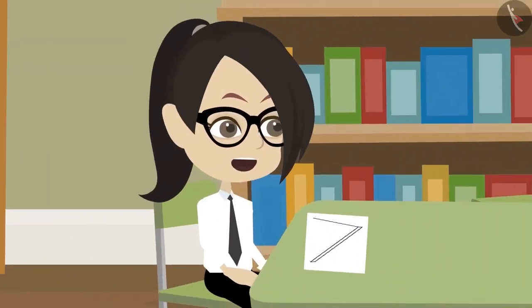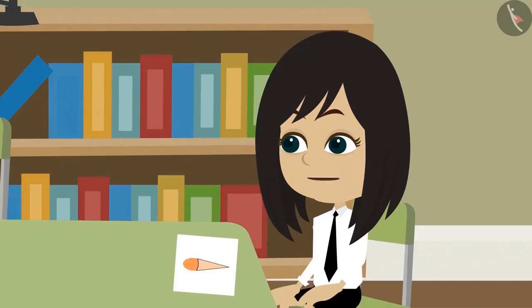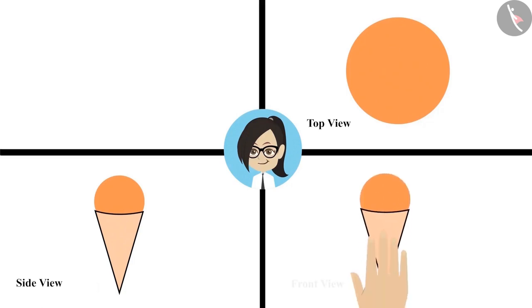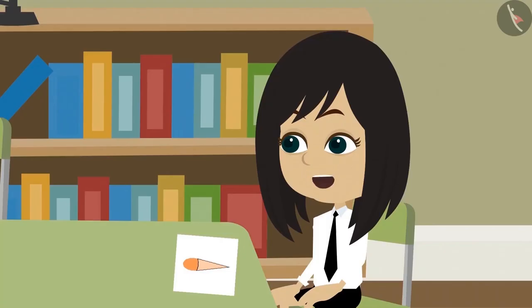I have completed my drawing. Even I am done. Look. First, let me see what you have made. Its top view is in the shape of a circle. And its side view looks like an ice cream cone with ice cream in it. And its front view is also the same as the side view. This is definitely an ice cream cone. Absolutely right.